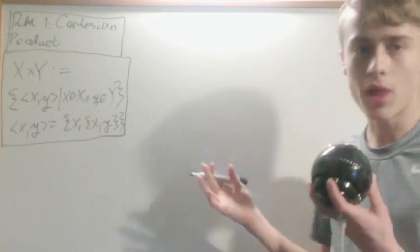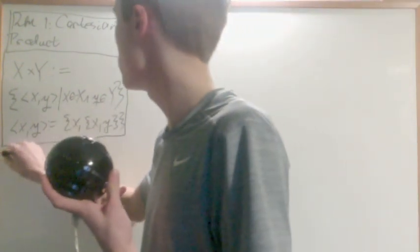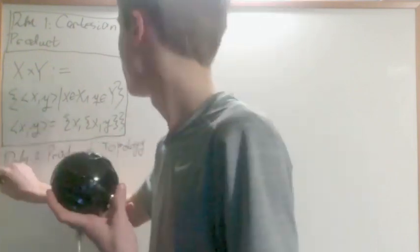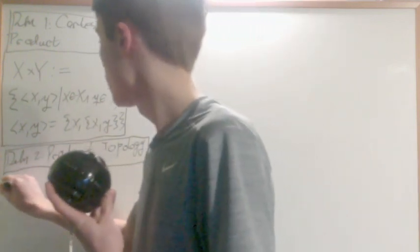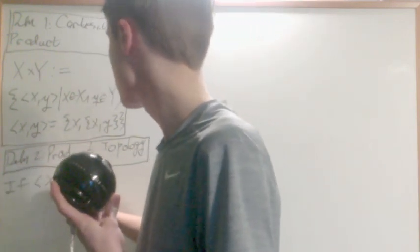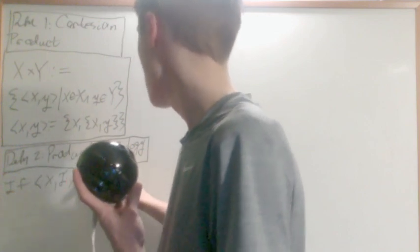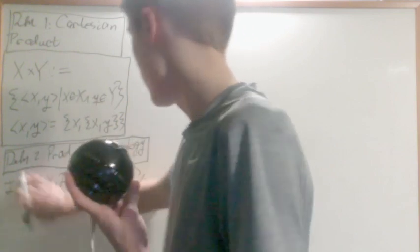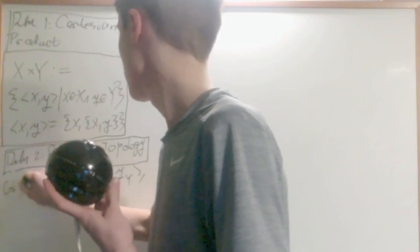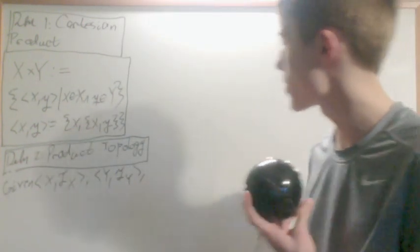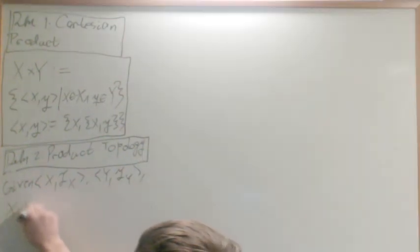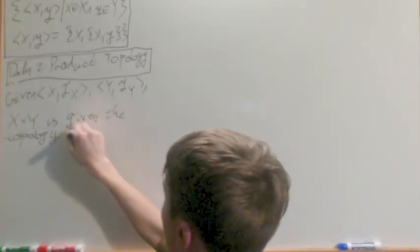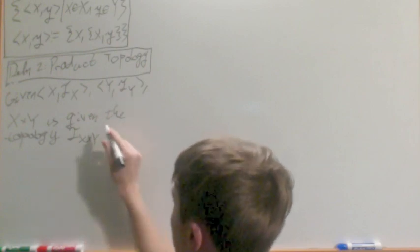And so how can we apply a topology on it? Definition 2 is going to be the product topology. If X with a topology TX, Y with a topology TY, so given X with that topology, Y with that topology, X cross Y is given the topology TX cross Y.